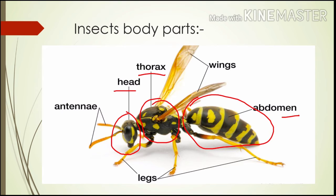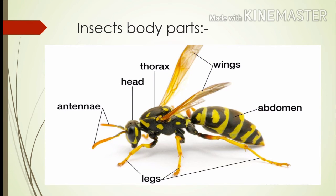The insect body is divided into 3 main parts. The first one is the head, the second one is the thorax, and the third one is the abdomen. Insects have eyes on their head. Some insects have long string-like things coming from their head — these are called antennae and feelers. The thorax is the middle part of an insect's body. The legs and wings are attached to the thorax. Insects have six legs and one pair of wings on their middle part of the body.